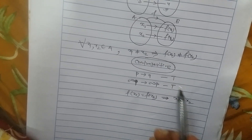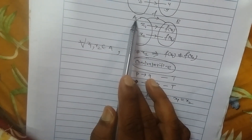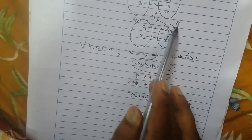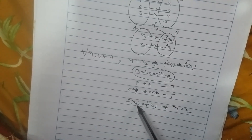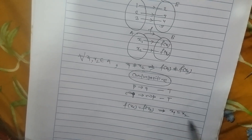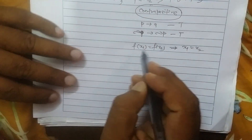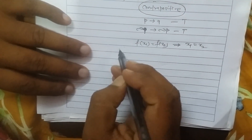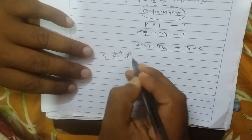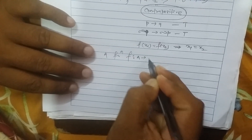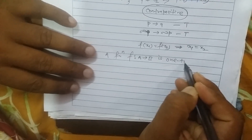So we can conclude: a function f from set A to set B is 1-to-1 if for all x1, x2 in domain A, f(x1) = f(x2) implies x1 = x2. Let us summarize — a function f from set A to set B is 1-to-1.